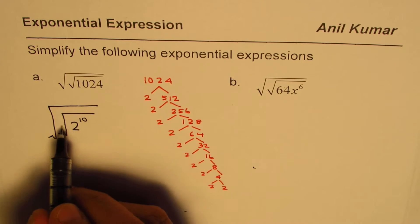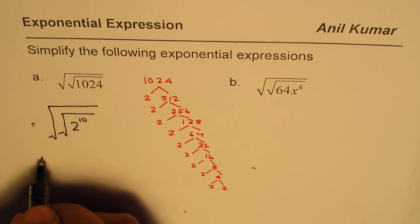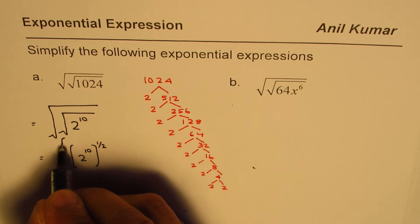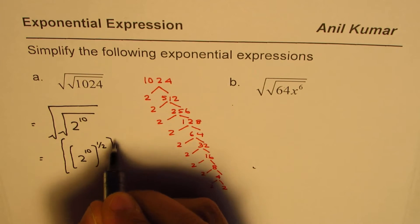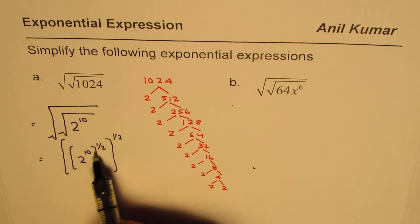Now a square root means half, or I could have also written this as equal to 2 to the power of 10. Square root means half, right? So we can write as exponential powers. Do you see that it becomes simpler? We can use the power rule now.